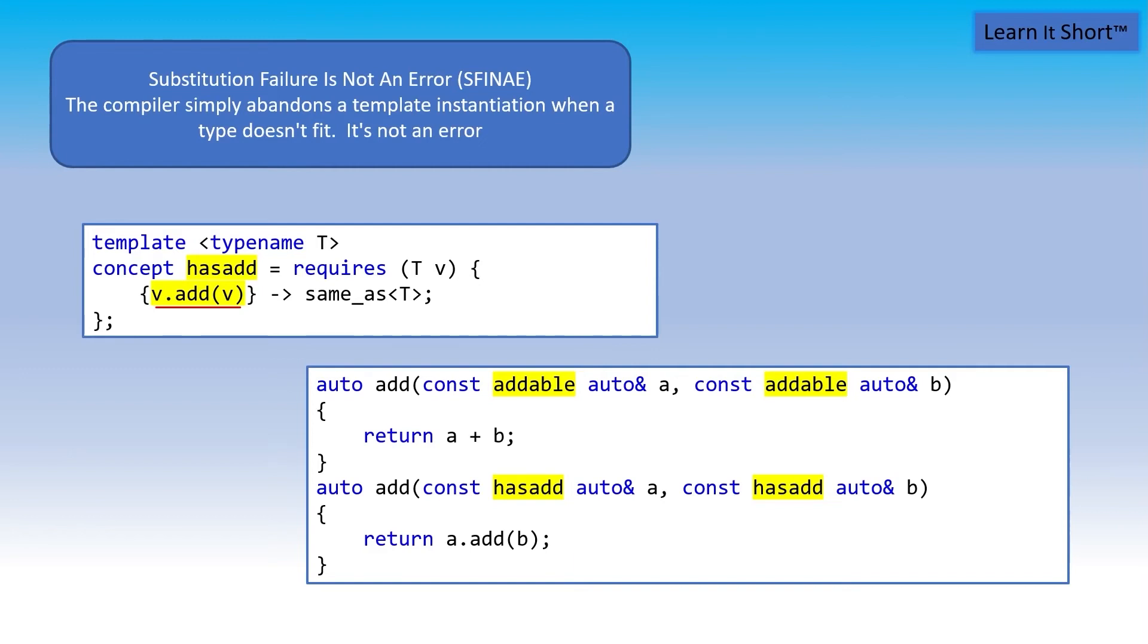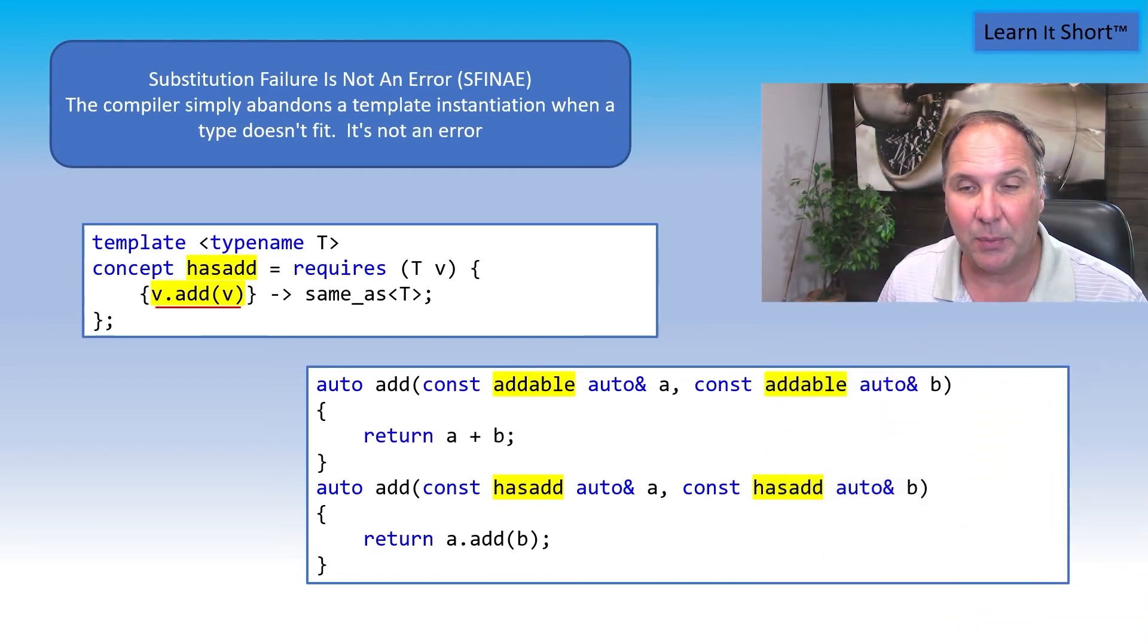When the compiler tries to expand this template with strings, string is going to fail in substitution, but that's not an error. The compiler just abandons trying to create that template. If it finds a different template, like the old addable one that takes the plus sign, the string class does substitute and that's the template that will instantiate the add method and that's what we'll call for strings.